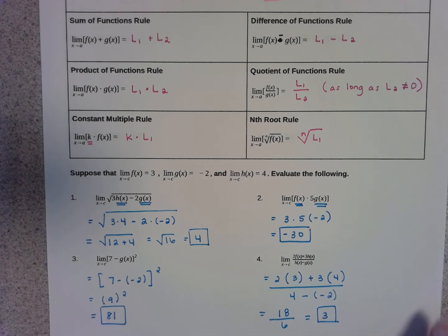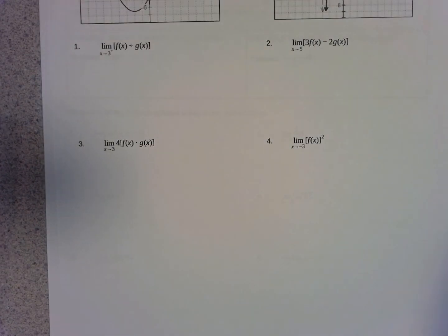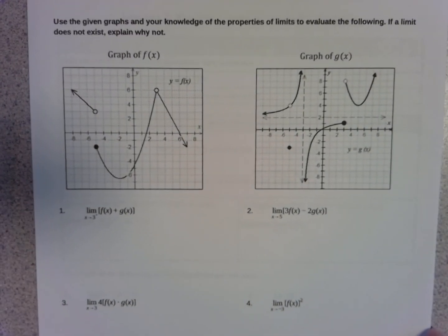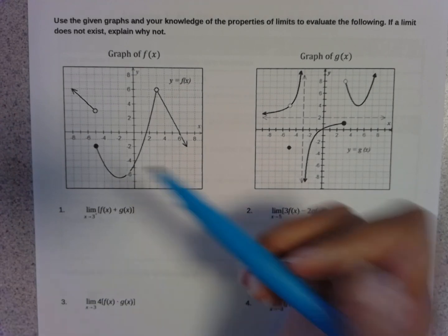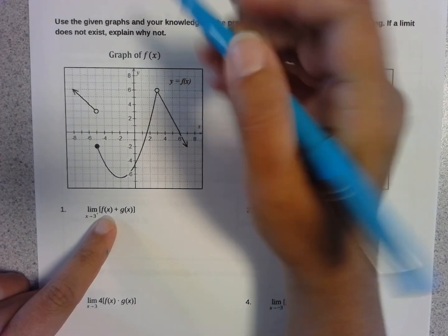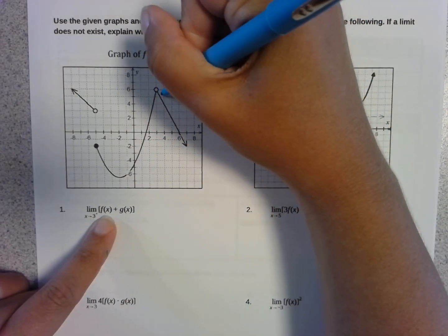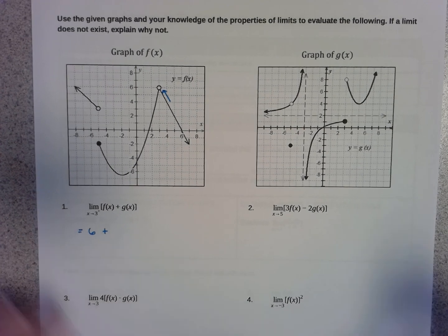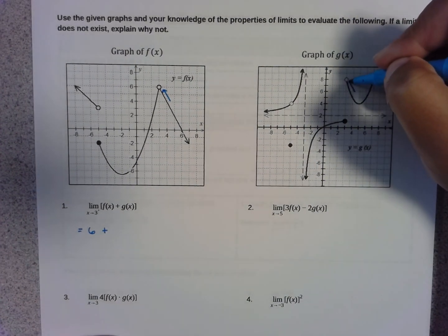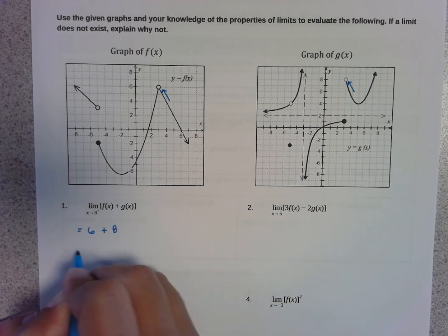Properties of limits — pretty straightforward, nothing super crazy going on. Now in the following questions, we're going to combine two things we've learned: finding a limit on a graph combined with properties of limits. Problem 1 says find the limit as x approaches 3 from the right of f(x) plus g(x). The limit as x approaches 3 from the right of f(x) gives us 6, and g(x) from the right as x approaches 3 gives us 8. And 6 plus 8 is 14.